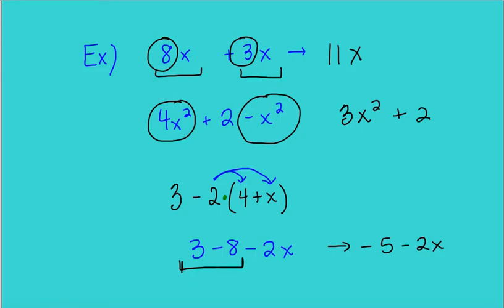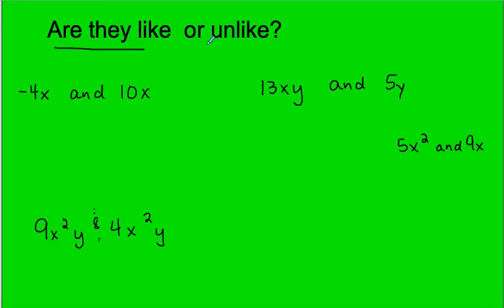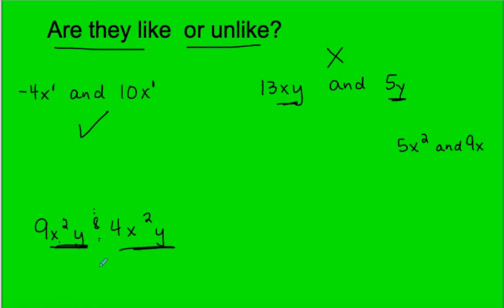I want you to see — are they unlike or are they like? Negative 4X and 10X: same variable raised to the same exponent — they're alike. 3XY and 5Y: one has XY, the other has just Y — they are not like terms. 4X squared Y and 4X squared Y: same variables raised to the same exponent — they are like terms. 5X squared and 9X are not like terms; you can't add them.